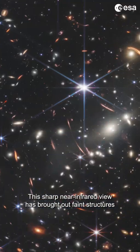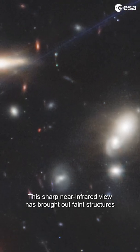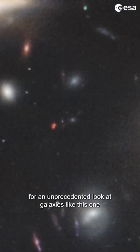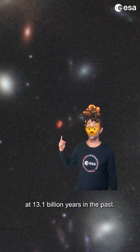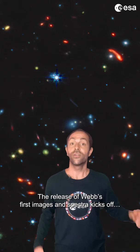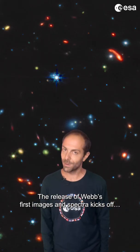SMACS-0723: This sharp near-infrared view brings out faint structures and extremities on galaxies for an unprecedented look at galaxies as they were 13.1 billion years in the past, marking the release of Webb's first images and spectra.